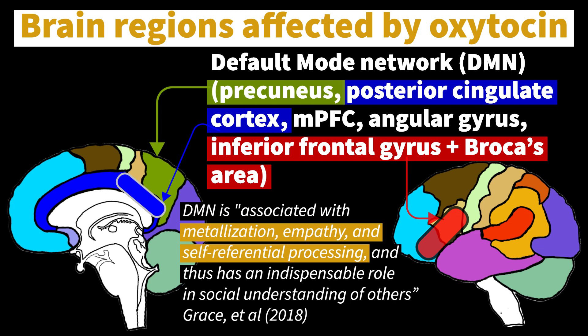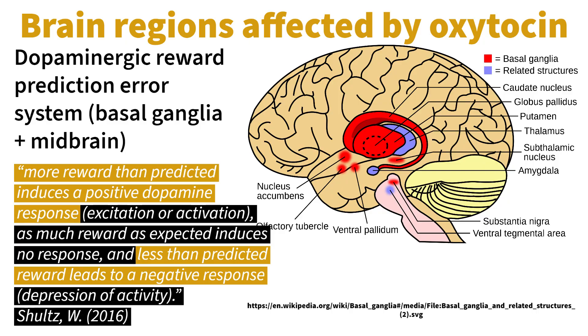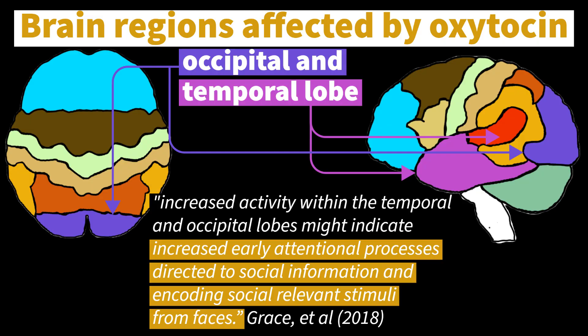The authors also observed consistent functional changes to the default mode network — a set of brain regions including the precuneus, posterior cingulate cortex, the medial PFC, and the inferior frontal gyrus. Increased default mode function has been associated with mentalization, empathy, and self-referential processing, and thus has an indispensable role in social understanding of others. Grace and colleagues also suggest that intranasal oxytocin increased activity in reward-based dopaminergic systems within the midbrain and basal ganglia that have a role in detecting socially relevant cues and providing subsequent reward. Finally, consistent activation was found in areas of the temporal and occipital lobes — the primary areas of auditory and visual processing respectively — possibly indicating increased attention to the social situation.